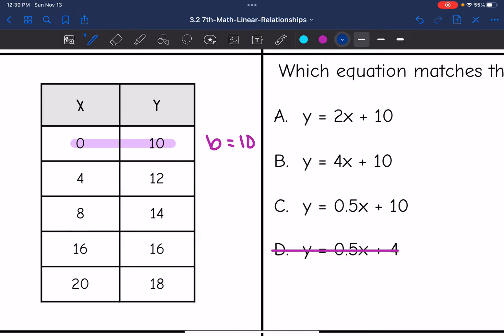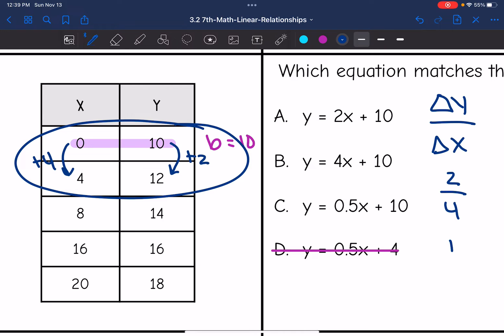So let's do the change in y divided by the change in x to figure out what the rate of change exactly is. So I'm just going to focus on the first two ordered pairs again. My change in y from 10 to 12 would be plus 2. And then my change in x from 0 to 4 would be plus 4. And 2 over 4 simplifies to one half. So my rate of change is one half or 0.5. So C is the equation that matches this.